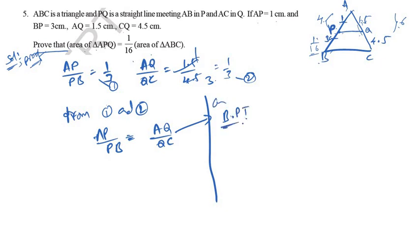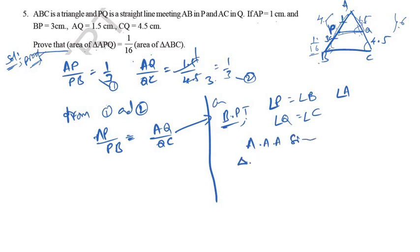From PQ parallel to BC, angle P equals angle B and angle Q equals angle C, with angle A common to both triangles. By Angle-Angle similarity, triangle APQ is similar to triangle ABC. The ratio of areas of two similar triangles equals the square of the ratio of their corresponding sides.